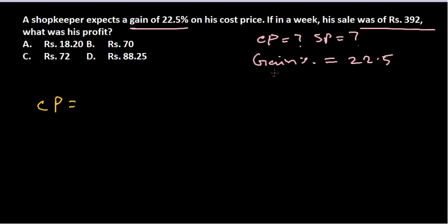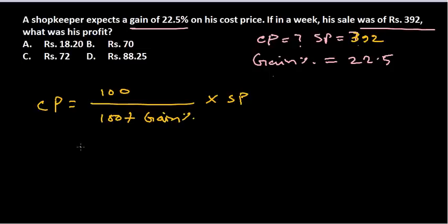Here the cost price will be using the gain price. What is the formula? The formula was 100 divided by—remember, 100 plus the gain percentage or 100 minus the losing percentage, whatever. Now here gain percentage is provided, so we'll put the value: 100 plus gain percentage into the total sale, and that is here, Rs. 392. This is the selling price, so it is into the selling price, Rs. 392. This was the formula and here is the implication of the formula.